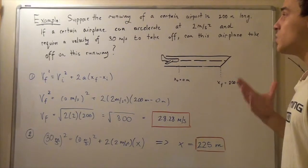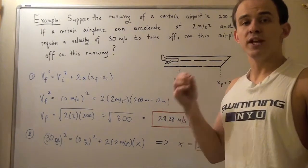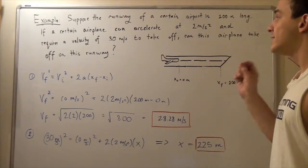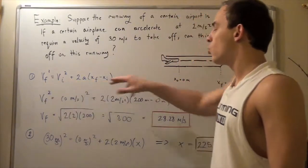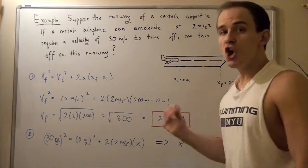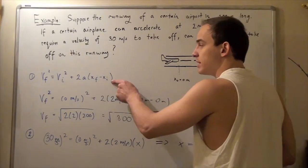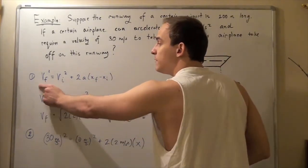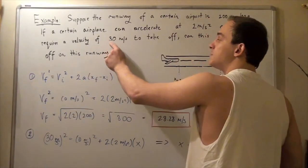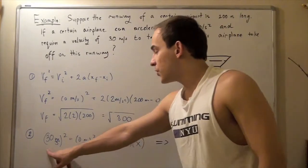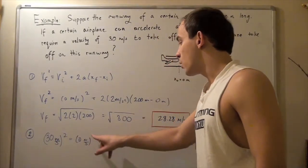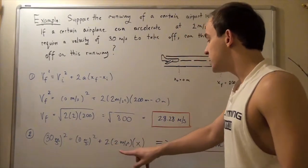So now suppose I want to find what length of runway we need for our airplane to take off. Once again, we can use the same equation, but now our unknown is our displacement. And now we know our v final, and we're going to use our takeoff speed and plug it into v final. So 30 squared equals 0 squared plus 2 times 2 times x.